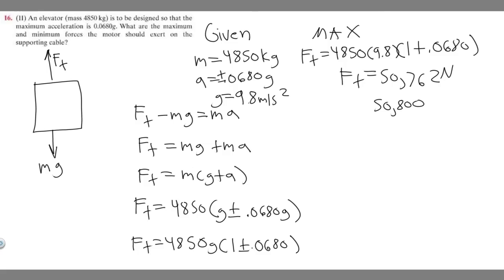Round this, make this an 8, so it would be 50,800. Then turn it into scientific notation by moving the decimal point 1, 2, 3, 4 places, so it becomes 5.08 times 10 to the 4th newtons. That's the maximum force.